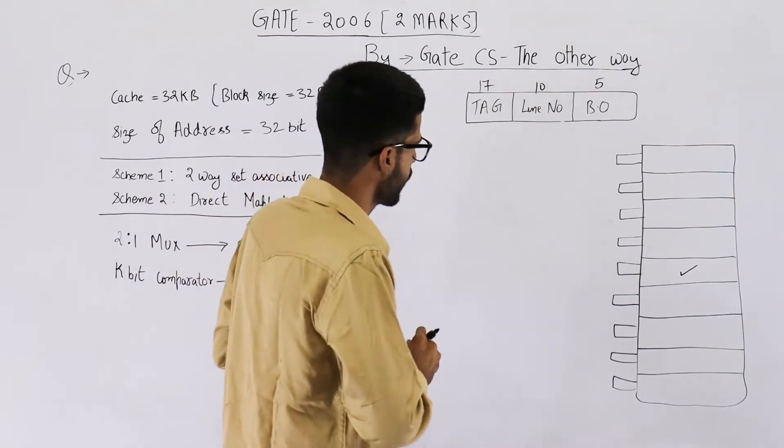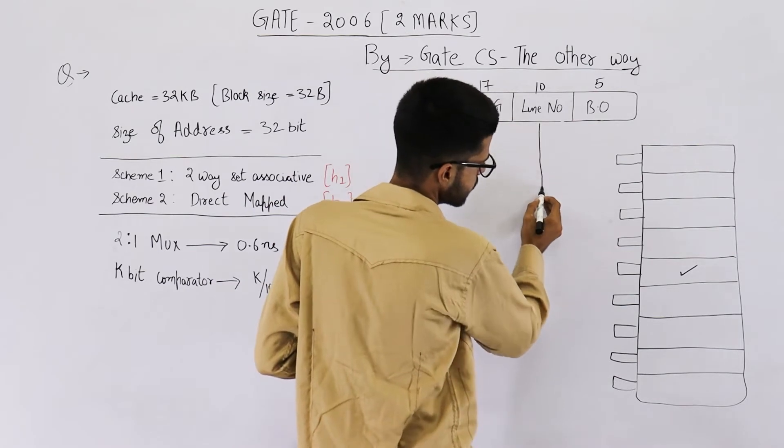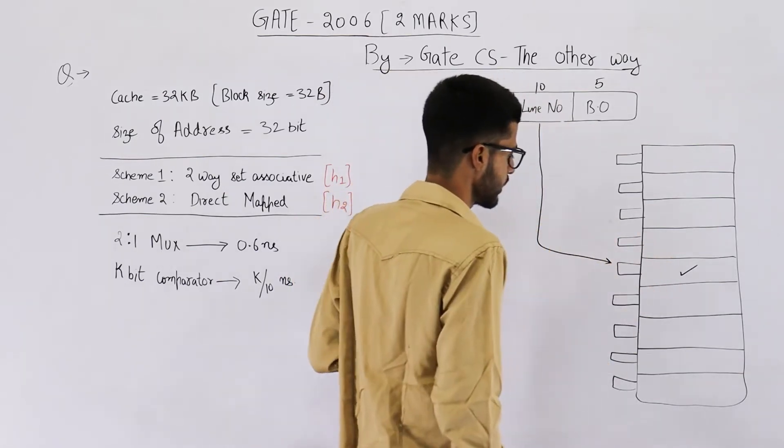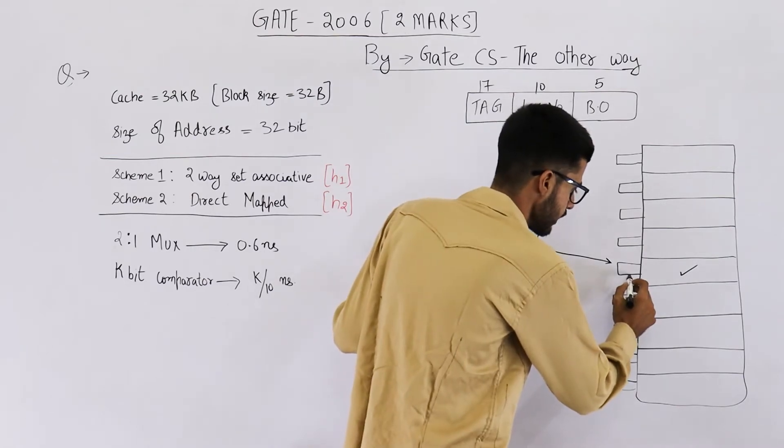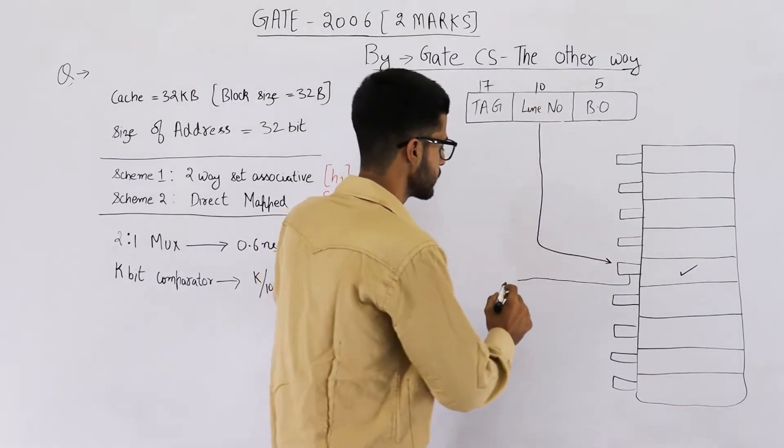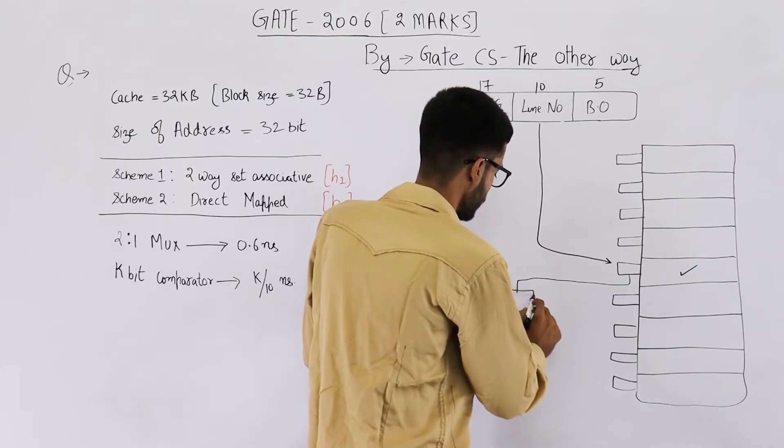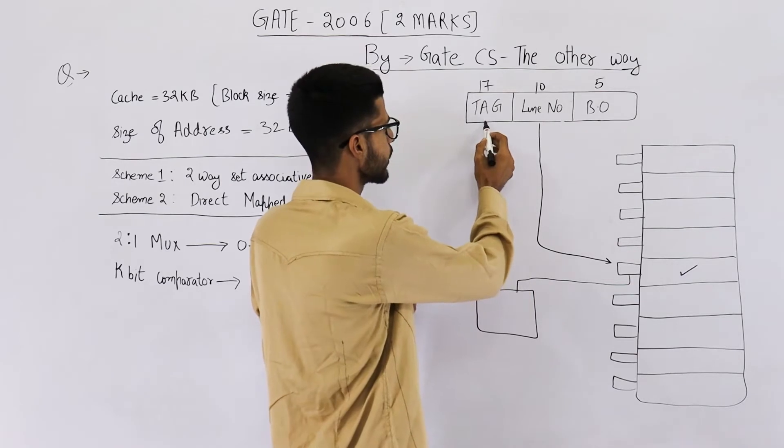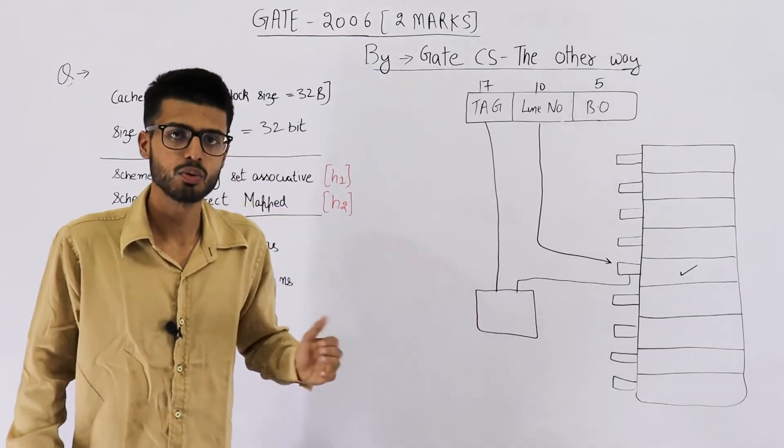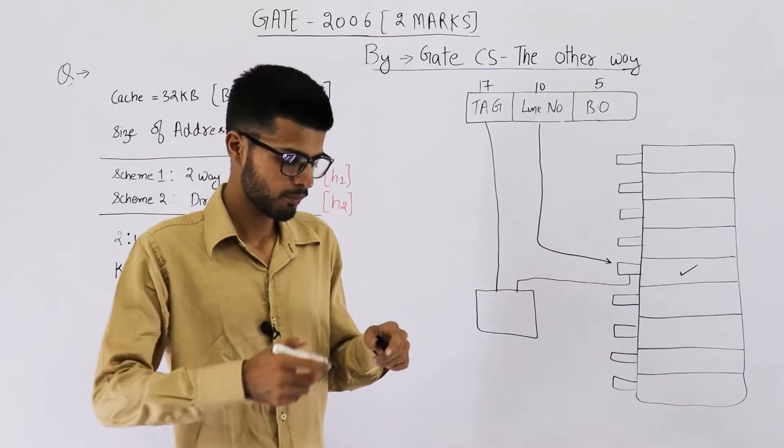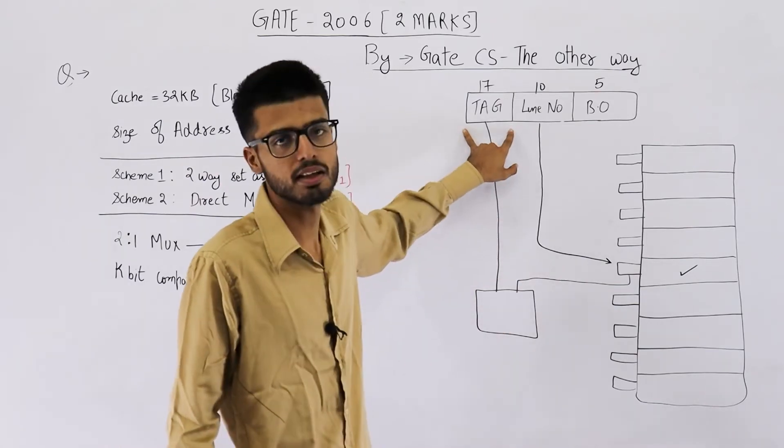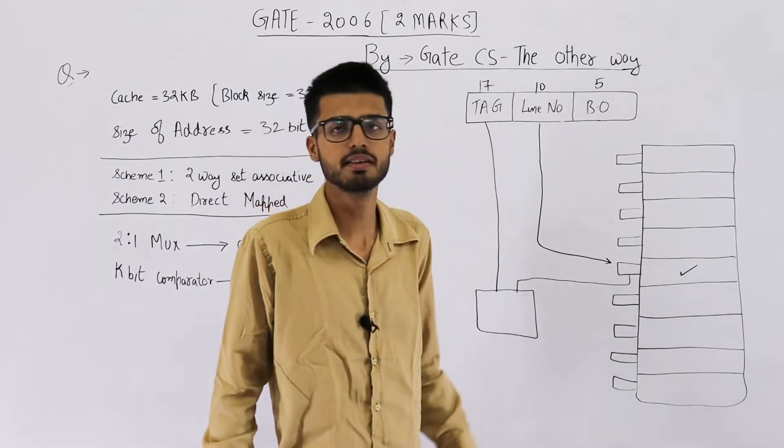So from here, you will just select this line. This much part indicates that this line has to be selected. After selecting that, you will take all these tag bits. And what you are going to do is, you are going to compare it with these tag bits. So what will be the hardware required? This is a comparator to compare some bits. Now, you know, comparators can be of different sizes. This comparator has to be a 17-bit comparator because we need to compare these 17 bits with these 17 bits.